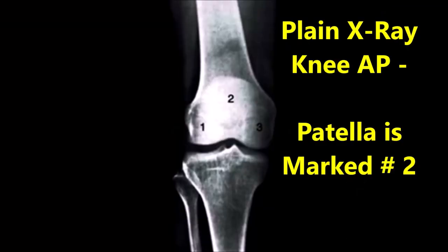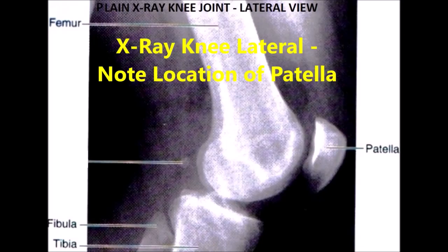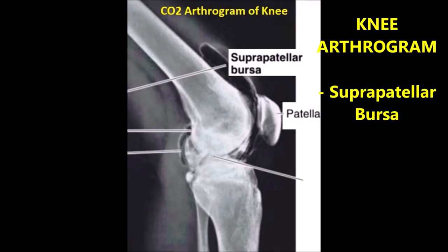This is an anterior-posterior x-ray of the knee showing the location of the patella when the knee is extended, and this is a lateral view of the same situation. This is an arthrogram of the knee using carbon dioxide injection to show the location of the suprapatellar bursa in relation to the patella.